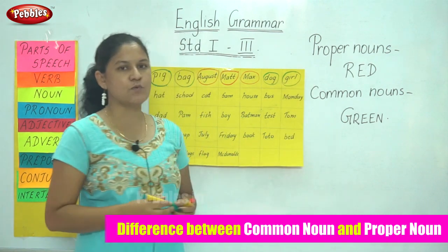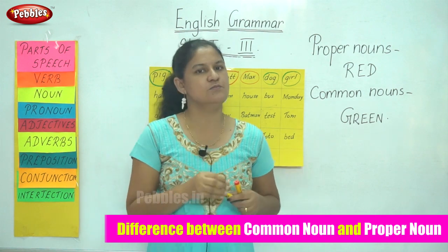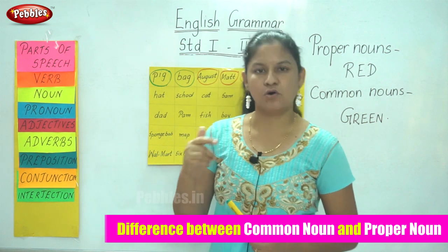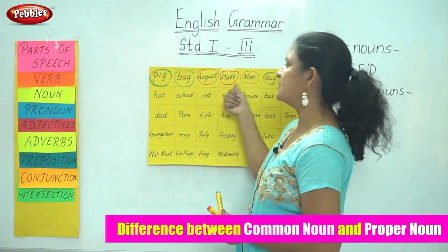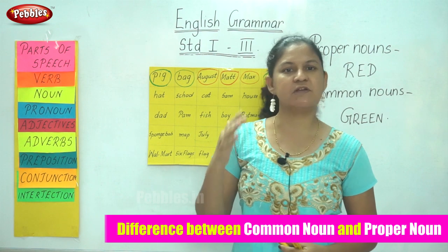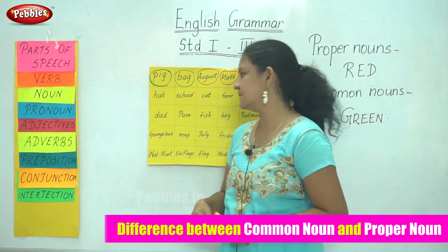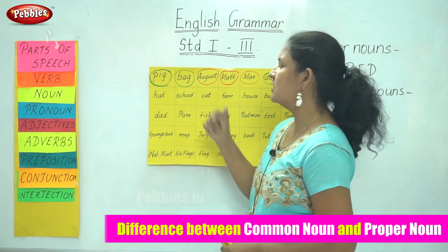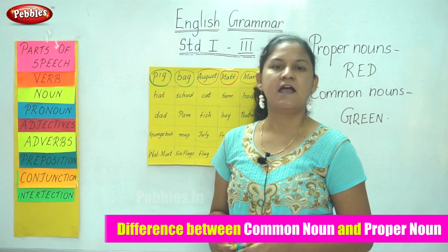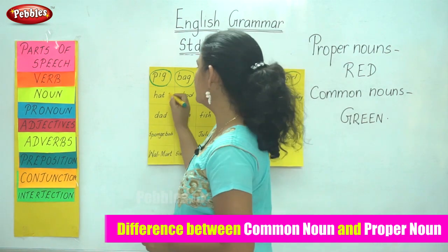I hope you understand the difference between a common noun and a proper noun. As already said, proper nouns always begin with a capital letter — they are names of specific persons, places, animals, or things. The next word is hat. Hat is the name of a thing and is a common noun, so I circle it with my green sketch.